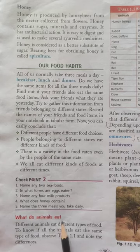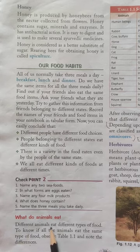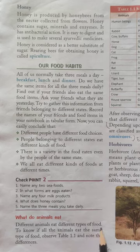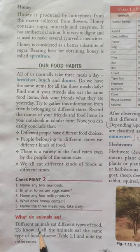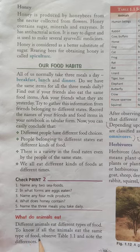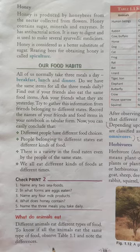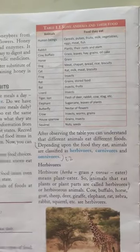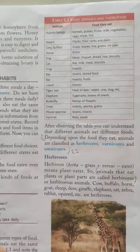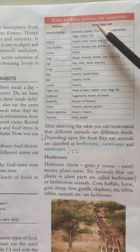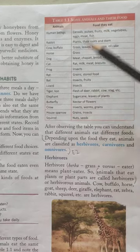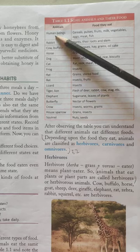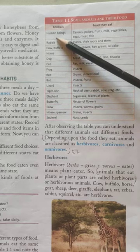What do animals eat? Different animals eat different types of food. To know if all the animals eat the same type of food, observe the table and note the differences. In this table, the names of the animals and the different food they eat are given. So you can see different animals eat different types of food.